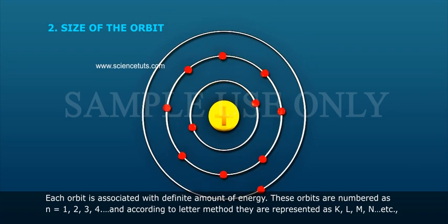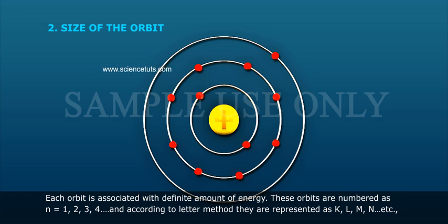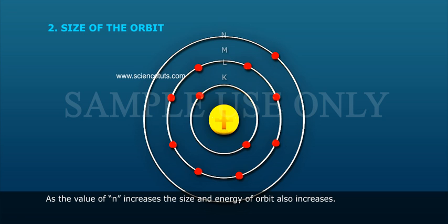Size of orbit: Each orbit is associated with a definite amount of energy. These orbits are numbered as n = 1, 2, 3, 4, etc. According to letter method, they are represented as K, L, M, N, etc. As the value of n increases, the size and energy of orbit also increases.